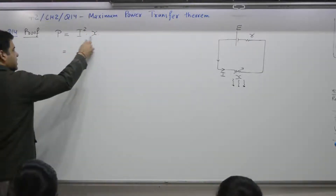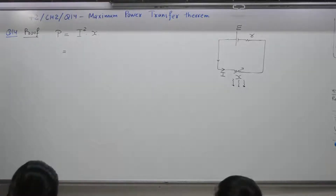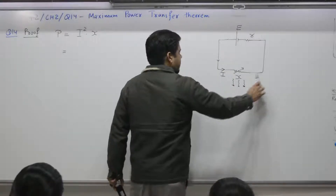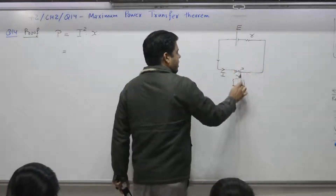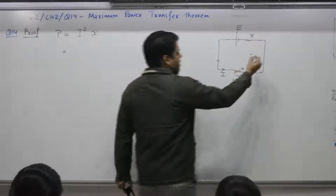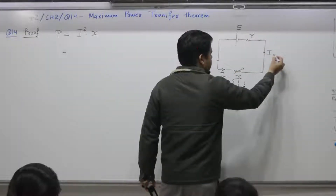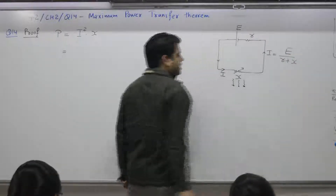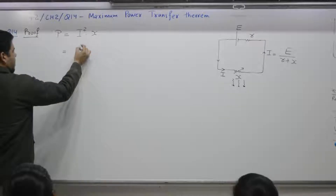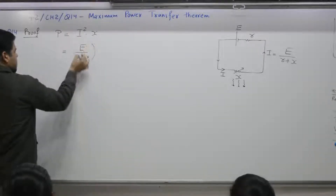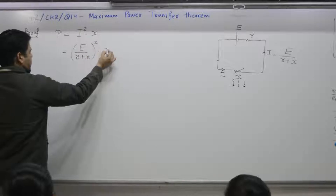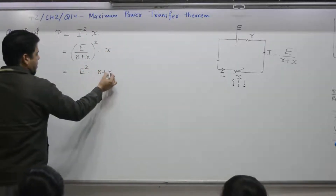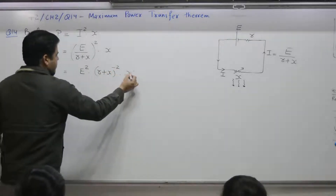Now I varies and X also varies, so we want to change it to a single variable. The current in the circuit I is equal to total EMF E divided by total resistance R plus X. So I squared is equal to E squared over (R plus X) squared, and power P is equal to E squared times (R plus X) to the power minus 2, times X to the power 1.